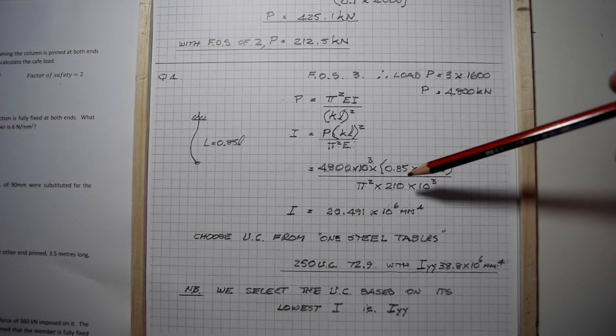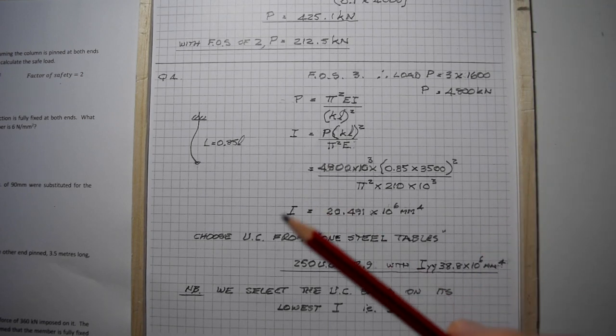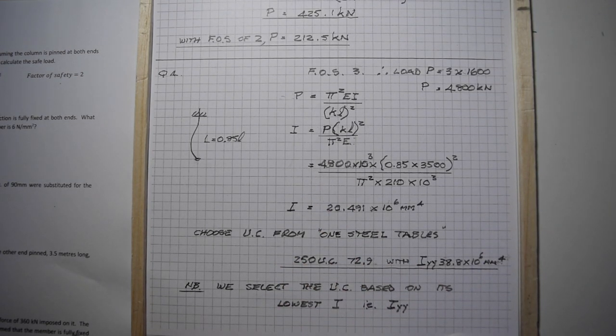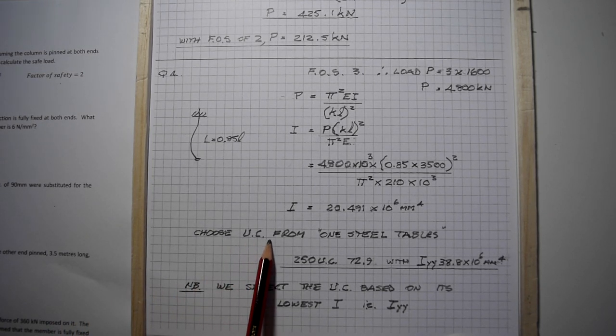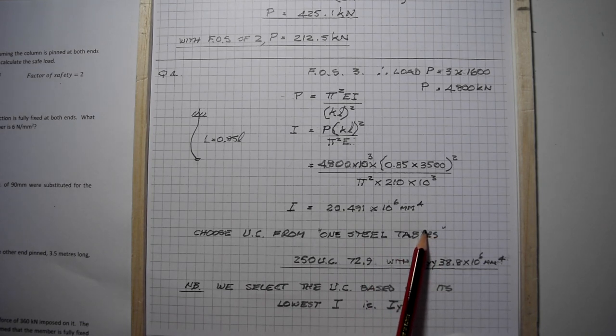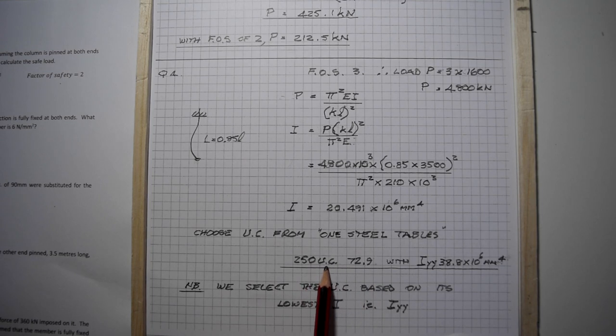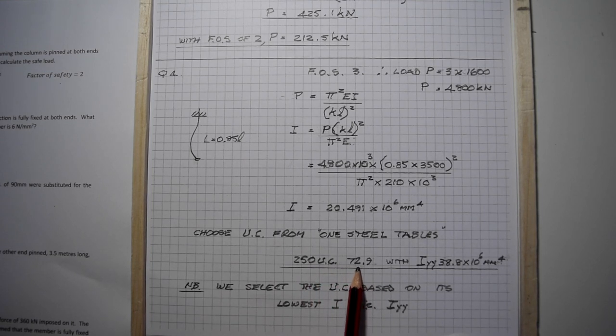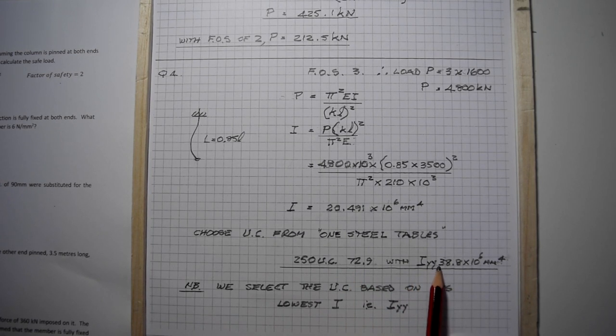From your one steel tables - a manufacturer of hot rolled steel sections - you choose a universal column from the tables. A universal column of 250 UC 72.9 kilograms per lineal meter with a least moment of inertia of 38.8 times 10 to the 6.